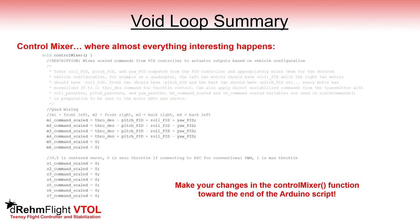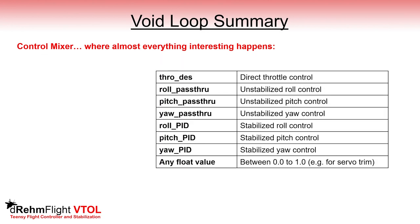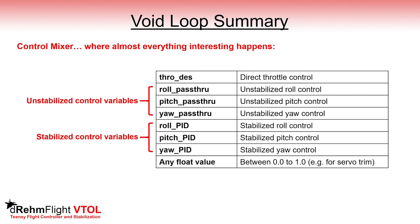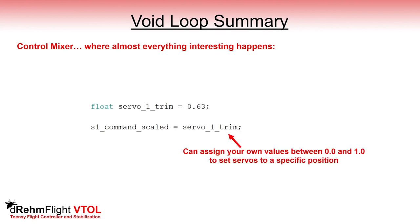The control mixer function is where you'll probably spend most of your time configuring the code. This is where assignments are made to the motor and servo command scaled variables according to the configuration of your aircraft. You must add whatever combination of the available variables is required to effectively fly the aircraft — for example, an elevon control surface will require both roll and pitch assignments, either unstabilized or stabilized depending on the requirements. You can assign custom values to the command scaled variables, for example creating a trim variable and assigning it to the S1 command scaled variable. This trim variable should be defined in the user specified variable section if it needs to be global, i.e., if it's being modified anywhere else in the code.